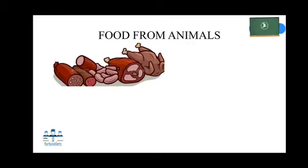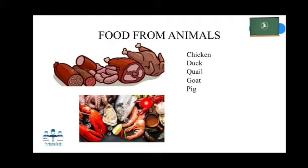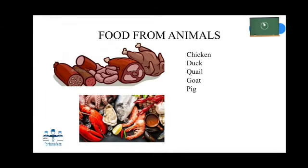We get meat from chicken, duck, quail, goat, pig, etc. For most people, seafood is their predominant dish. Seafood is obtained from fish, crab, jellyfish, prawn, etc.